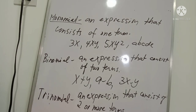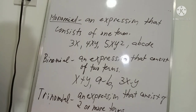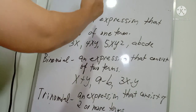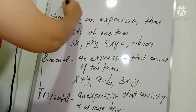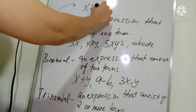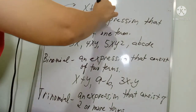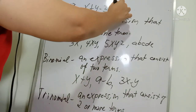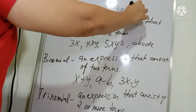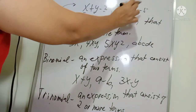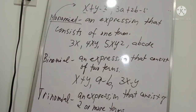A trinomial is an expression consisting of three terms. For example, x + y − z has three terms: 1, 2, 3 — that is a trinomial. Another example is 3a + 2b − 5, which also has three terms: 1, 2, 3 — so that is also a trinomial.